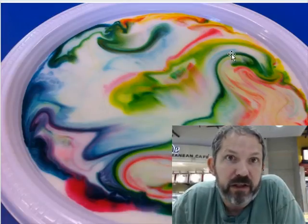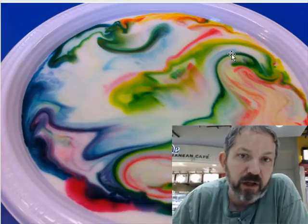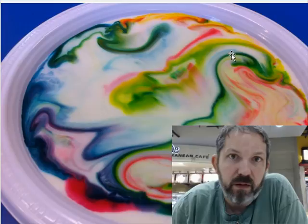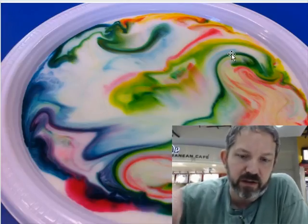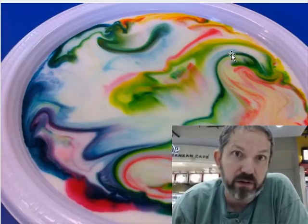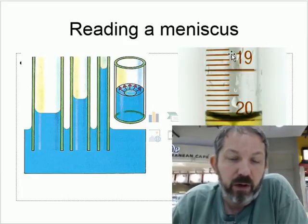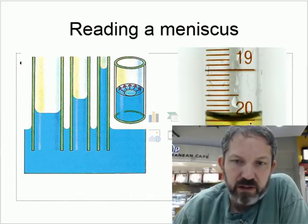Here's another surface tension demonstration. Get some whole milk, add drops of food coloring in different parts of the plate — the food coloring just stays there and doesn't really move. Then take a finger or Q-tip dipped in dish soap and stick it in, and you'll see how much it disrupts the surface tension — the motion suddenly becomes very dramatic. Also, this little concave shape in a graduated cylinder is called the meniscus, and you read from the bottom of the meniscus — so that would be 20 milliliters.